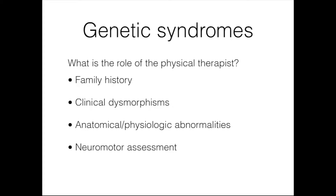Our neuromotor assessment should look for weakness, tone, motor control, and discoordination, all often seen in children with genetic disorders. We may also see global developmental delay, learning and behavior problems, language delays, and autistic-like behaviors. Published guidelines suggest that any child with global developmental delay be referred for genetic testing, so it's important for us to look at the whole picture and refer those children and families for genetic testing to rule out genetic syndromes. Table E2-1 in your book summarizes indications for genetic services.